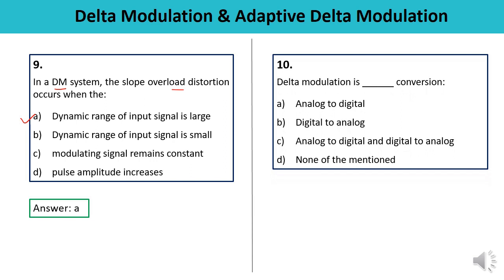Question 10: Delta Modulation is what type of conversion — analog to digital, digital to analog, both analog to digital and digital to analog, or none of the above? Delta Modulation is the process of both analog to digital and digital to analog conversion, which is used for the transmission of voice signals. So the answer is C.